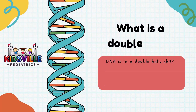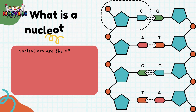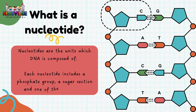DNA is in a double helix shape — it consists of two parallel strands of DNA twisted around each other. Nucleotides are the units which DNA is composed of. Each nucleotide includes a phosphate group, a sugar section, and one of the four bases.